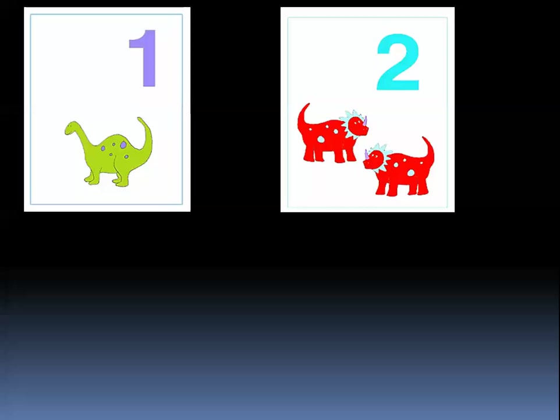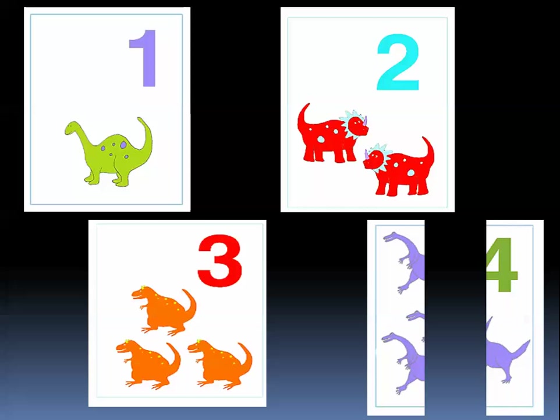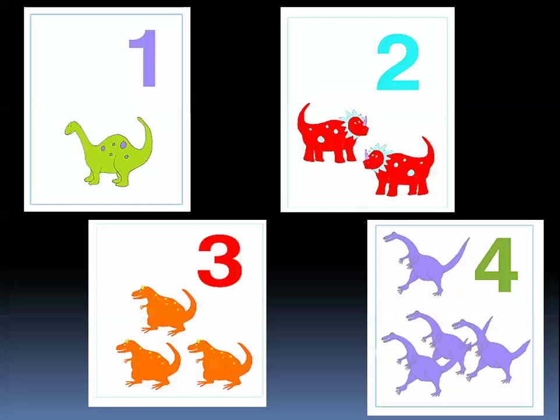After two comes number three. This is number three. Let's count: one, two, three. And after three comes number four. This is number four. Let's count these dinosaurs: one, two, three, four.